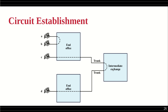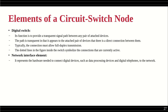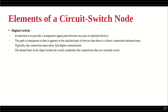We can call all these devices exchanges. An end office is an exchange where subscribers are directly connected; other exchanges are intermediate ones. Looking at a typical circuit switching node, it is a digital switch containing a network interface element and a control unit. The function of the digital switch is to provide a transparent signal path between any pair of attached devices.